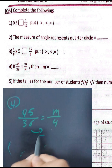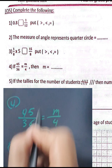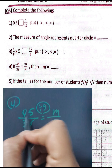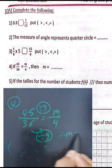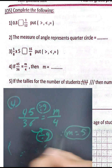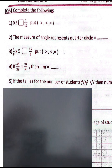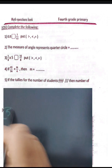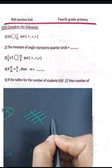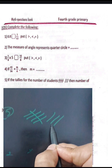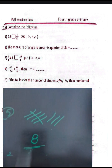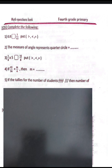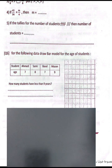Question number four: 45 over 36 equals m over 4. Since 36 divided by 9 equals 4, then 45 divided by 9 equals 5. So the value of m equals 5, because 5 times 9 equals 45. If the tiles number here is counted, we can write 1, 2, 3, 4, 5, 6, 7, 8, so the number is 8.